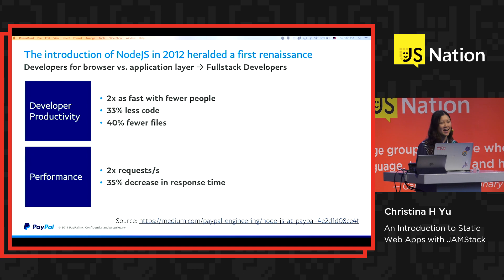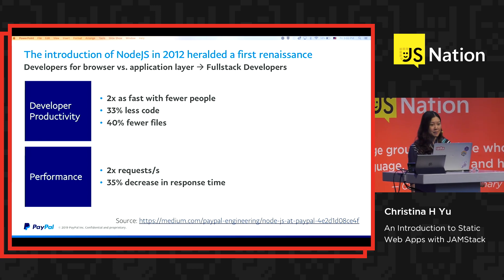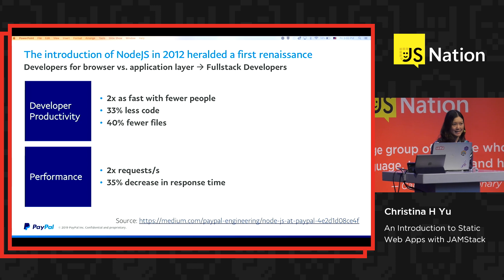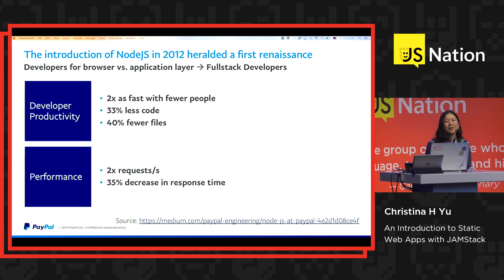Trialing this on several apps at first, we found developer productivity and performance to improve significantly. We were able to build apps twice as fast with fewer people in Node.js, write less code, and serve fewer files. In terms of performance, these apps could handle twice as many requests per second with a decrease in response time.